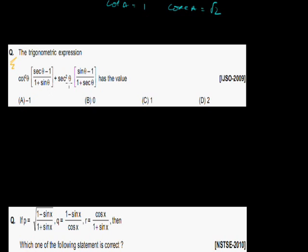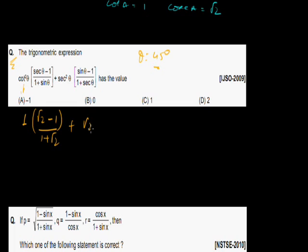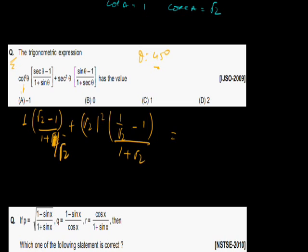Next: the trigonometric expression is cos²θ·(sec θ minus 1)(1 plus sin θ)·sec²θ·(sin θ minus 1). It is very important how you assume the value here — you can't assume a value that makes 1 plus sin θ or 1 plus sec θ equal to 0. Assume the appropriate value. Let θ = 45°. Cot²θ is 1, sec θ is √2, so we get 1·(√2 minus 1) upon (1 plus √2), with sin θ = 1/√2. Simplifying: 1·(√2 minus 1) upon (1 plus √2) — that is (√2 minus 1)(√2 plus 1) plus 2√2, over √2² minus 1. On simplification I get 0. So the answer is 0.